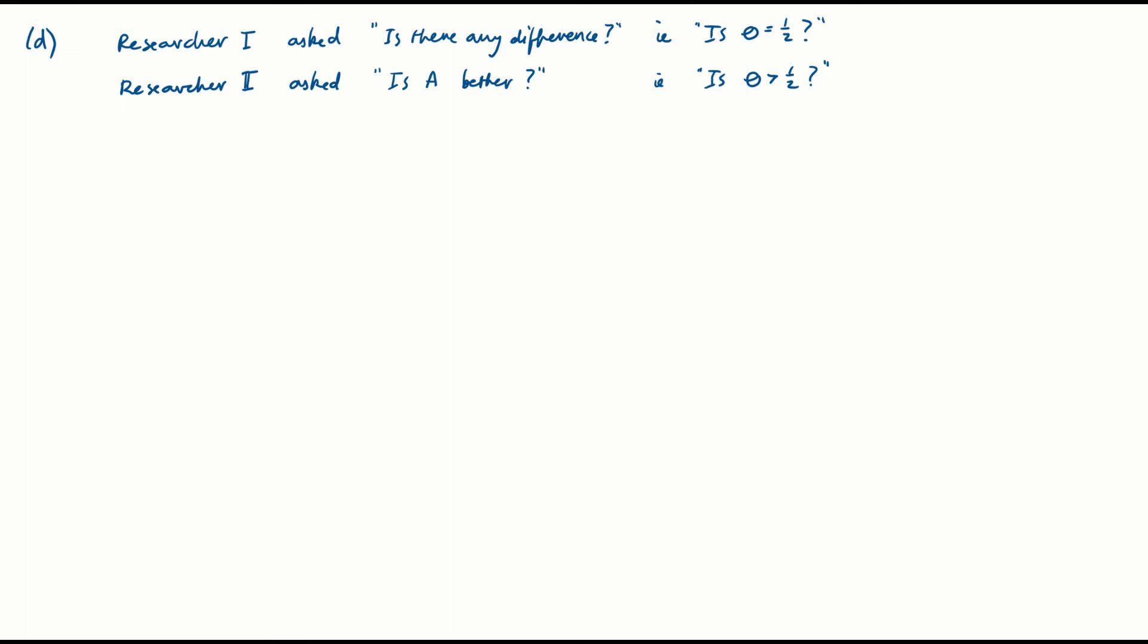Next, part D. The question asks us, do we give the same advice, the same confidence interval, the same hypothesis testing to these two different researchers? Let's just summarize. Researcher one asked the question, is there any difference between the two machine learning systems? In other words, they asked the question, is theta equal to a half? Whereas researcher two asked, is A better? In other words, is theta greater than a half? They're asking two different questions. So shouldn't be surprising if they end up with slightly different answers.